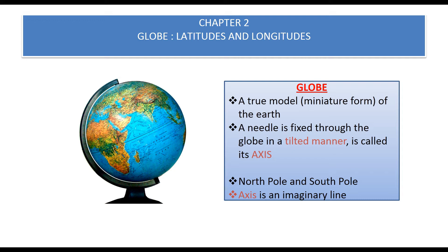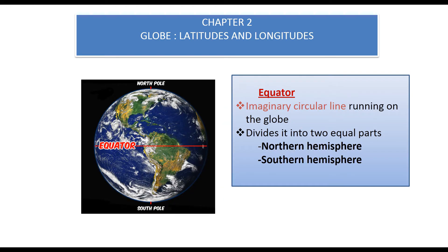A needle is fixed through the globe in a tilted manner, called the axis. Remember, this is an imaginary line — the real earth doesn't have it. The globe rotates around this axis. The two points through which the needle passes are the two poles: the north pole at the top and the south pole at the bottom.